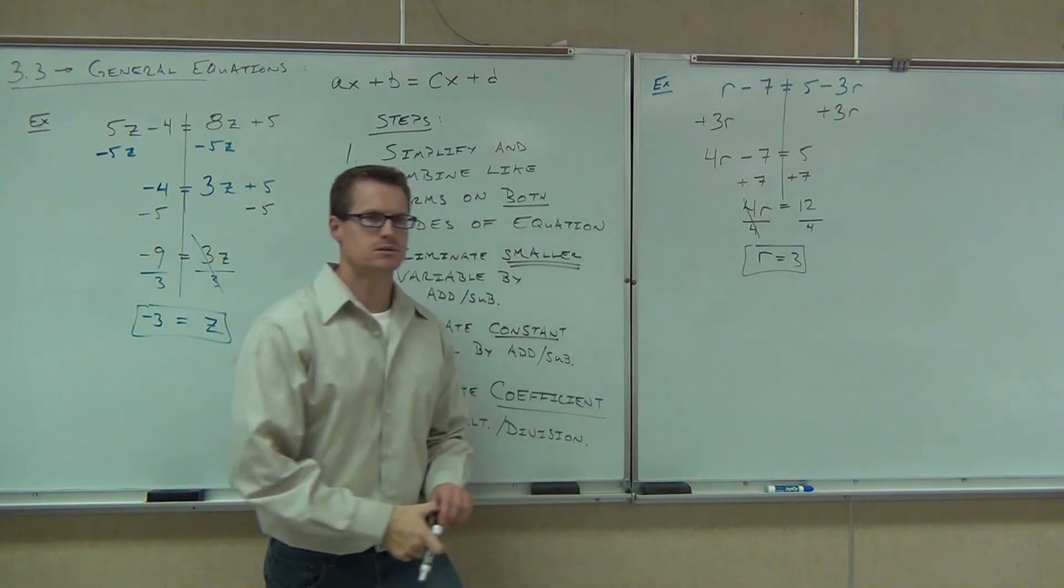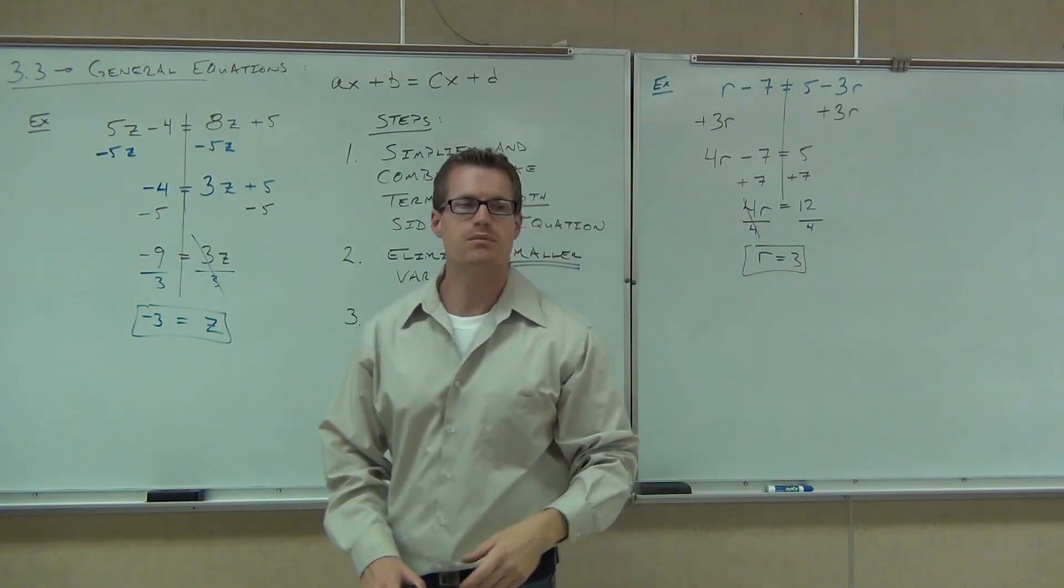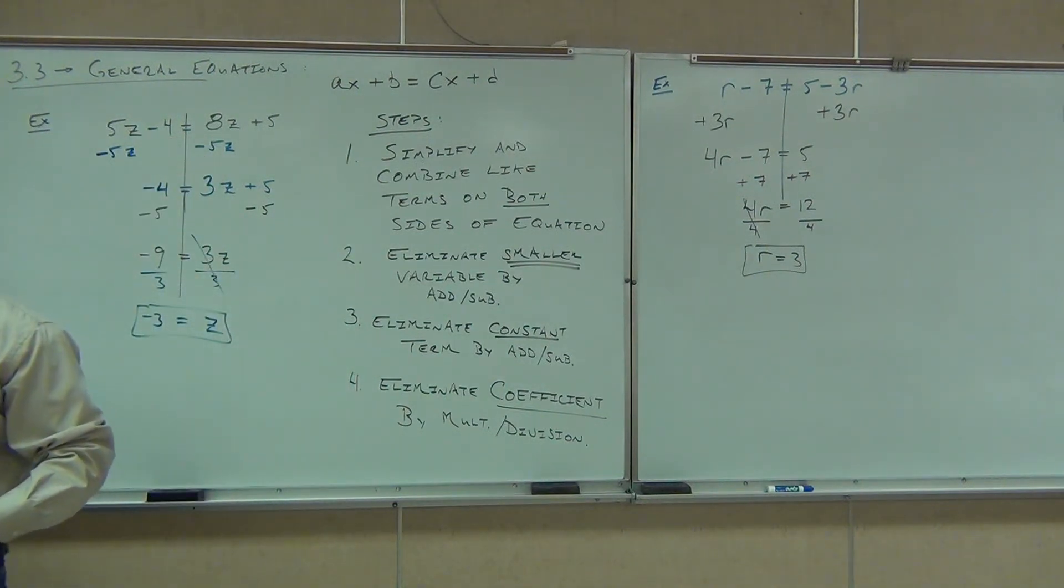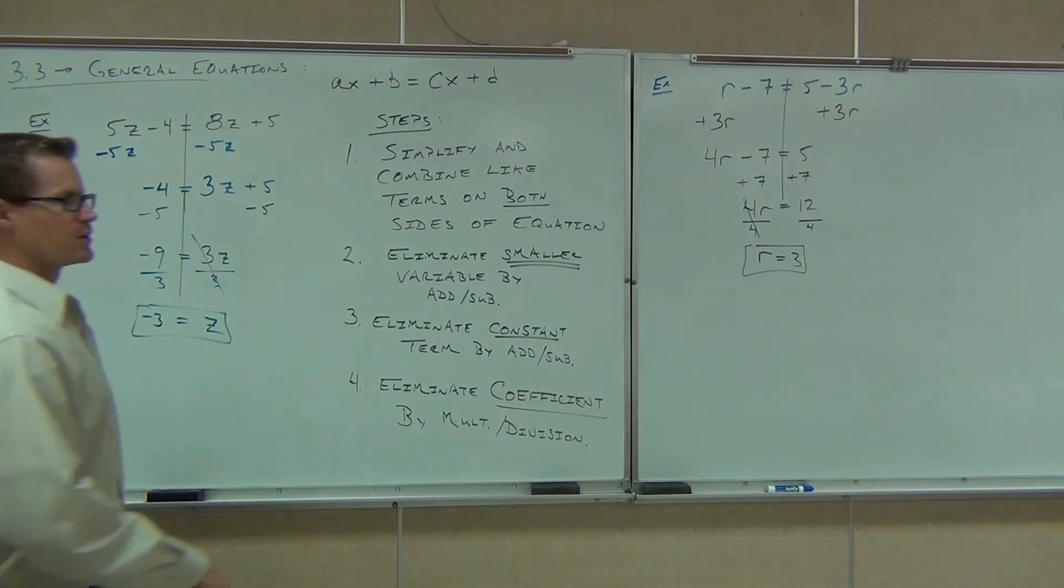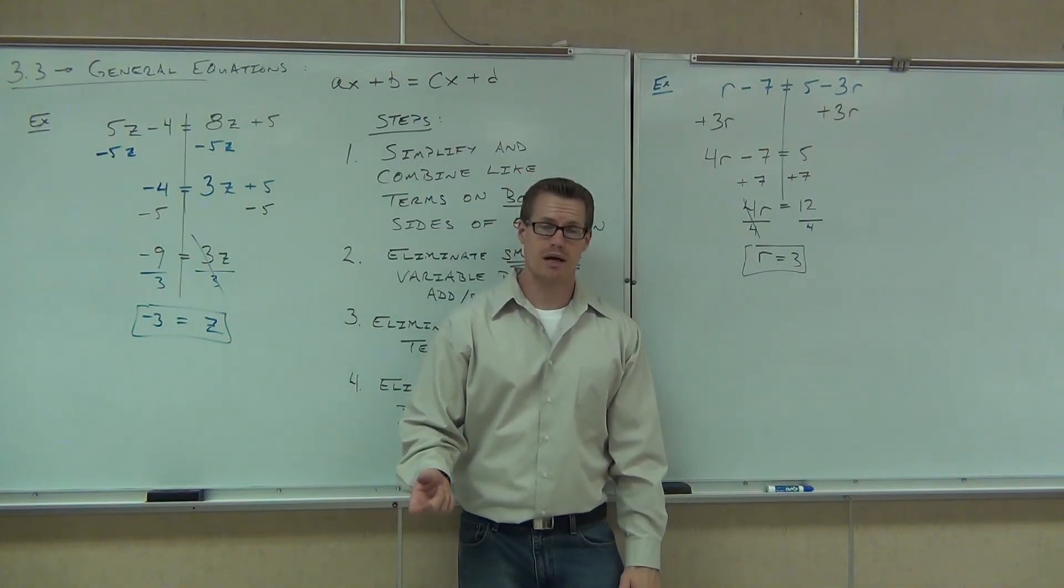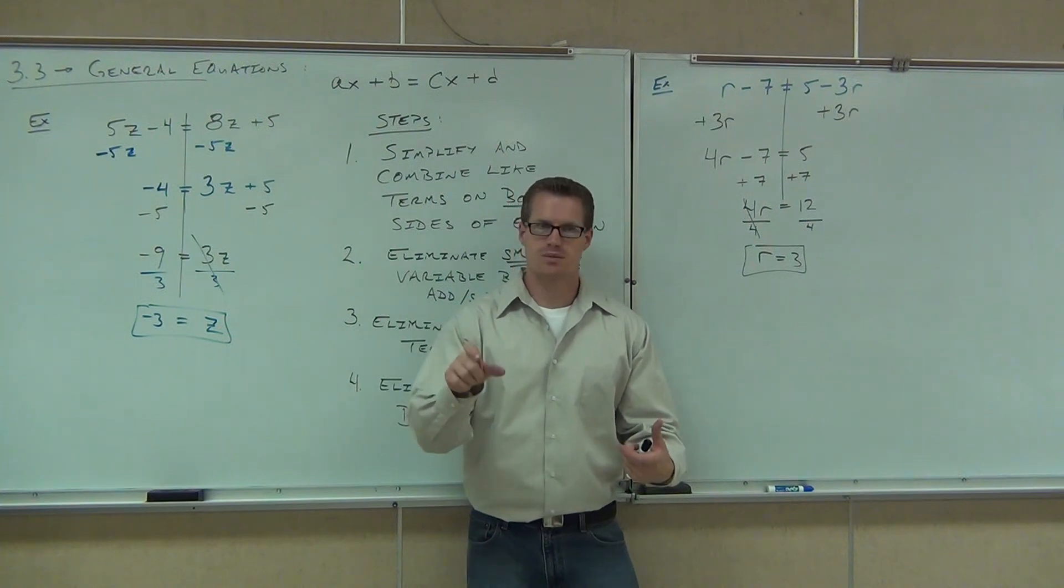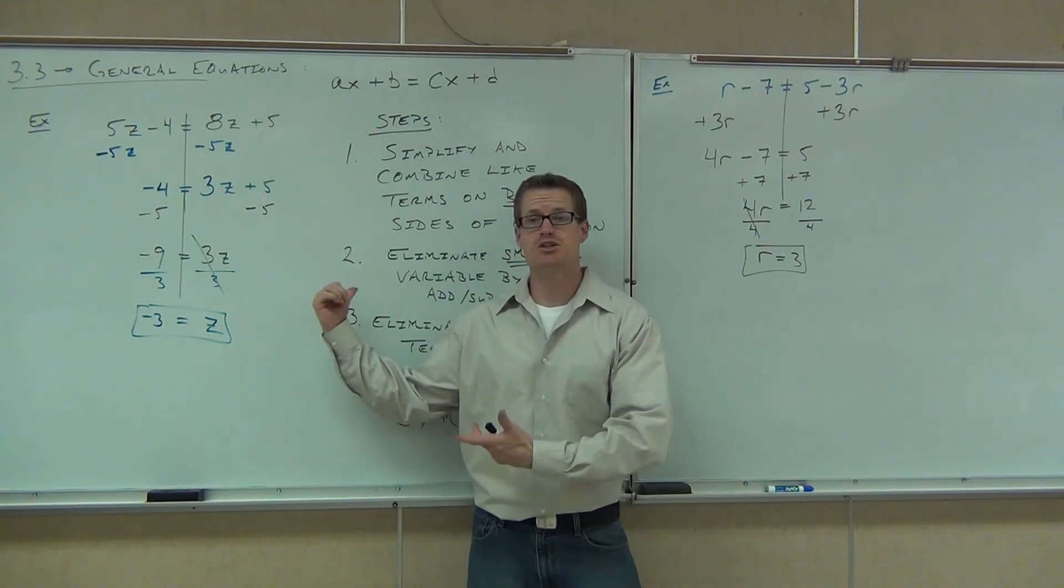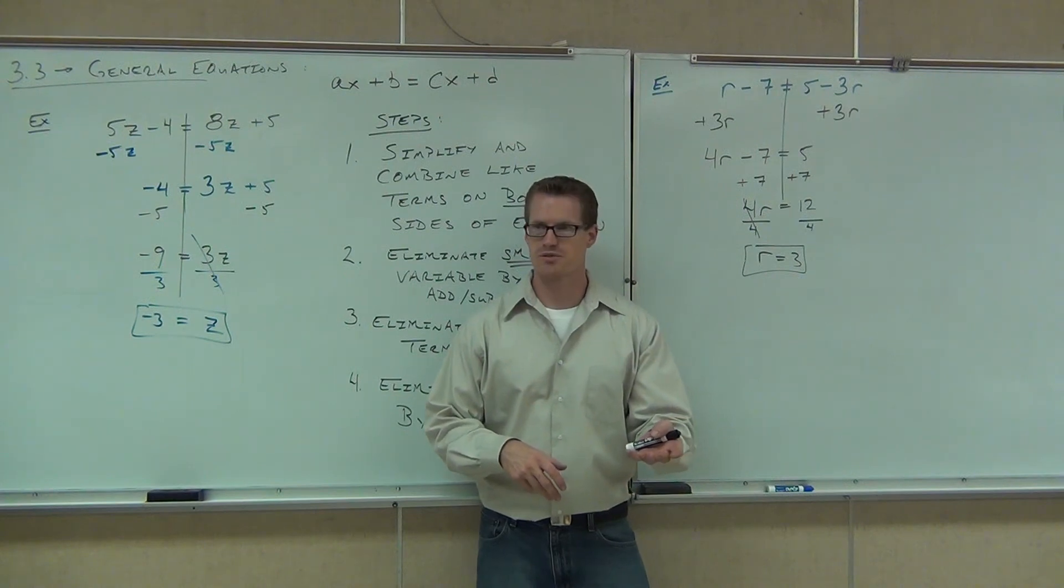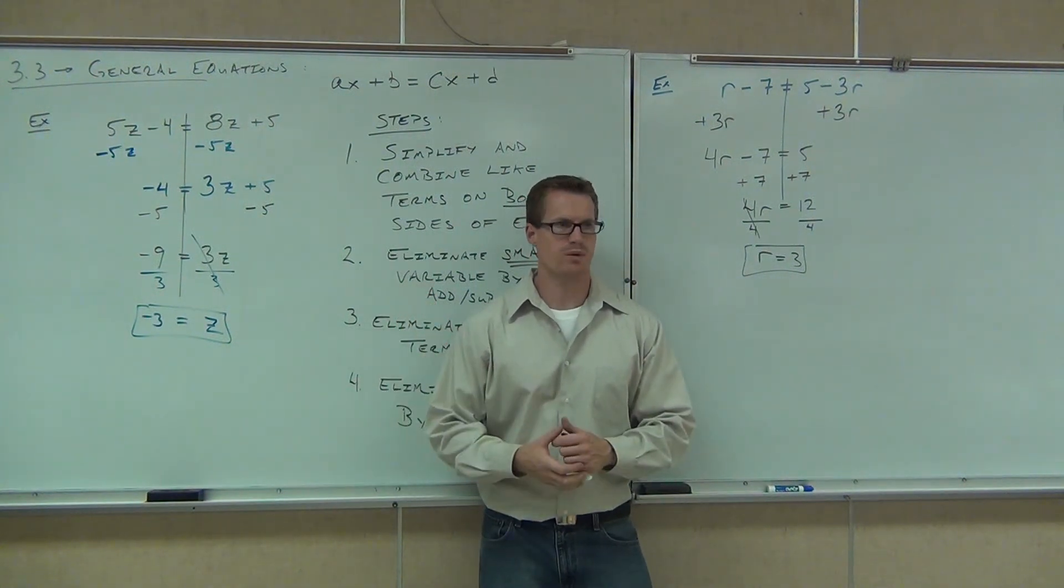Can you still check your work? Sure. If we plug that in, we'd have 3 minus 7, that's negative 4. We'd have 5 minus 9, that's negative 4. That comes out the same. Will it work out the same if you subtract the R instead of add the 3R? Yes, it will work out the same. It has to. It's an equation. The problem is, when you do that, you're dividing by negative, and sometimes that messes up a lot of people. So what I'm doing here is making this easier for you. I'm saying get rid of the smaller variable, that way you don't have to divide by negative.